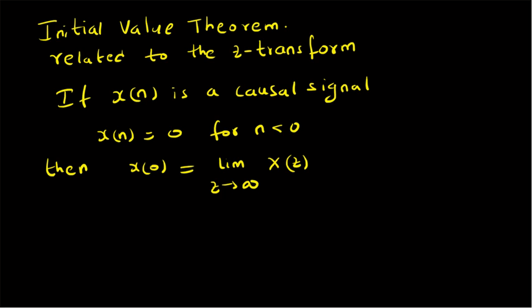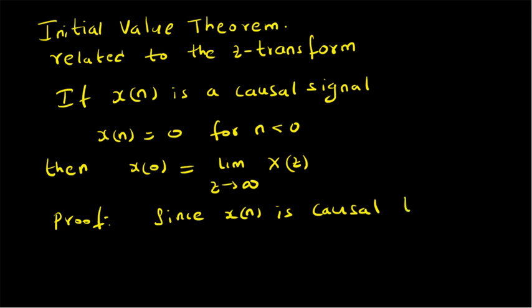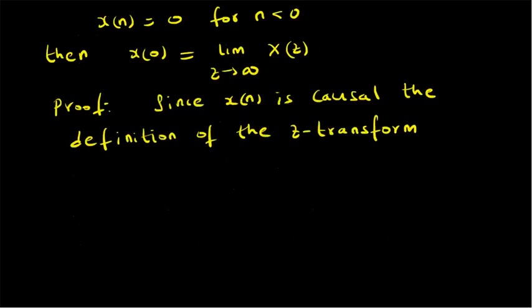Let us look at the proof for this theorem. Since X of N is causal, the definition of the Z-transform can be written as X of Z is equal to summation from N equal to 0 to infinity of X of N times Z power minus N. So instead of minus infinity, we have 0 because of the causality of the signal X of N.